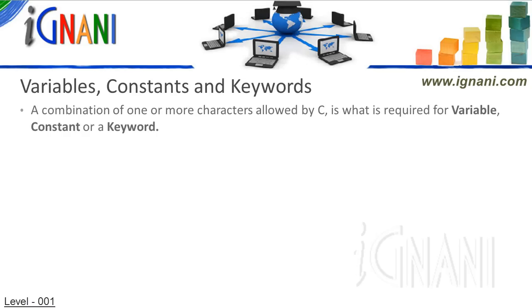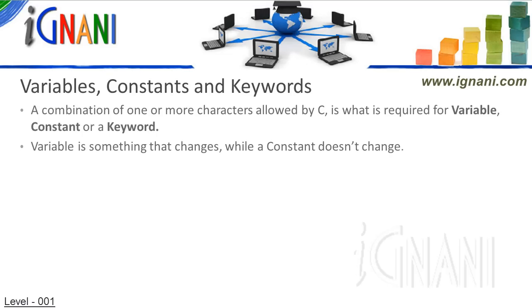Let me start with variables and constants and what they mean in C. As in English, even in C, they mean the same. A variable is something that varies or changes, while a constant doesn't change.